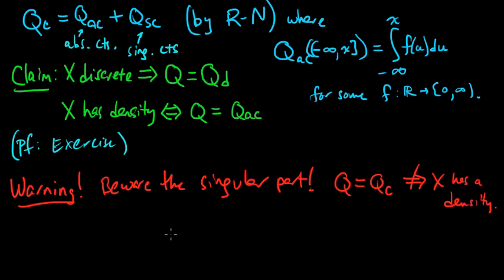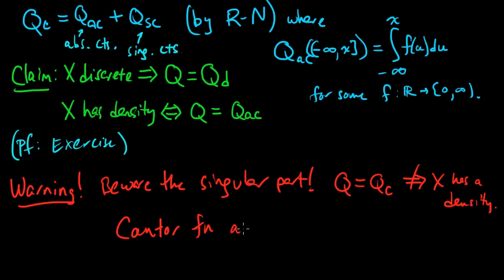A quick example to demonstrate that this implication does not hold is what's called the Cantor function. The classic counterexample in all of analysis — the Cantor set — gives rise to the Cantor function, which is this beautifully mysterious function. If you take the Cantor function as the CDF of a random variable, then it has a singular continuous part but no discrete part and no absolutely continuous part. So in particular, it has no density and it has no point masses.